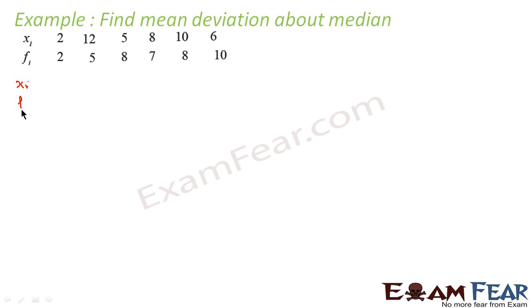Let me write this: xi and fi. So the minimum is 2, I write 2 here with 2. Then comes 5, I write 5 with 8. Then comes 6, I write 6 with 10. Then comes 8, I write 8 with 7. Then comes 10, I write 10 with 8. And then comes 12, so I write 12 with 5.